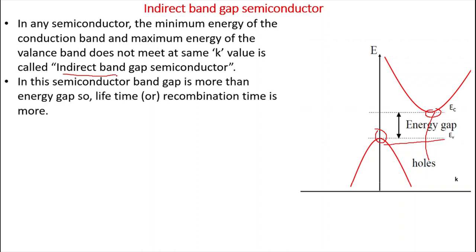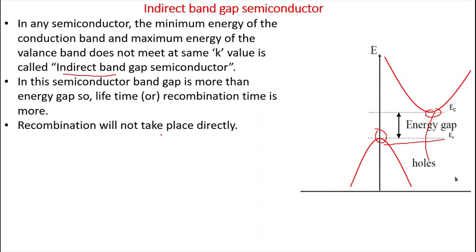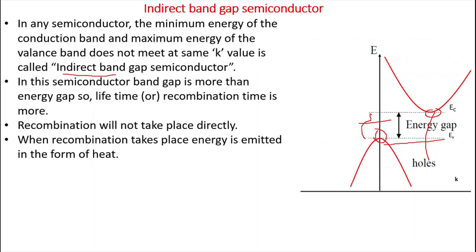In this kind of semiconductor, the energy gap is less than the bandgap — or you can say the bandgap is more than the energy gap. Because of this, the lifetime or recombination time is a bit more compared to direct bandgap semiconductors, and recombination does not take place directly. It occurs through some recombination center.